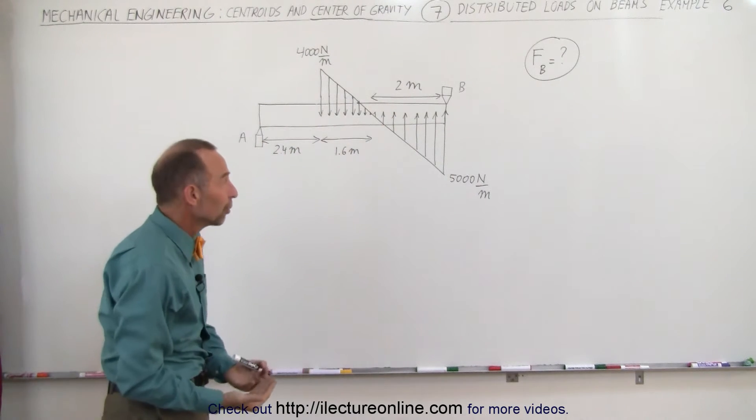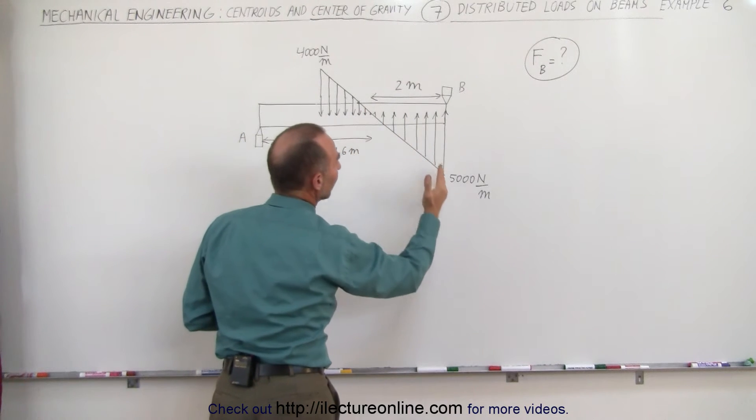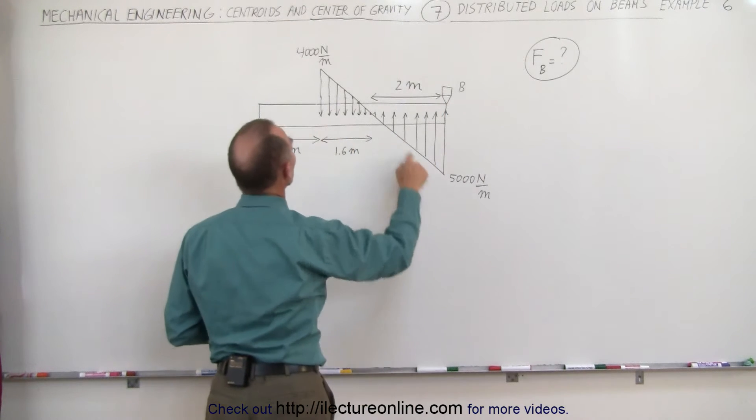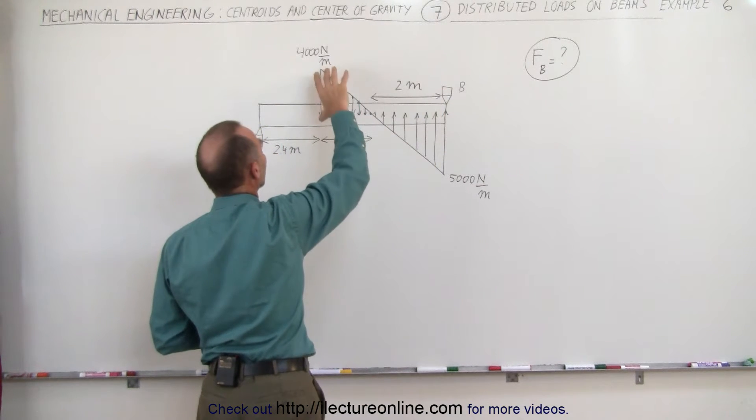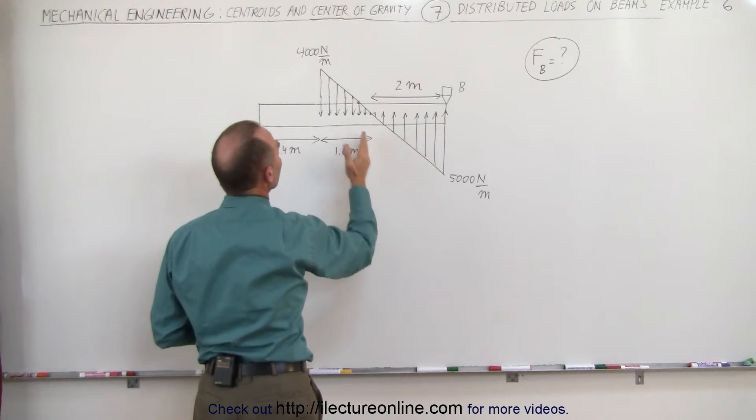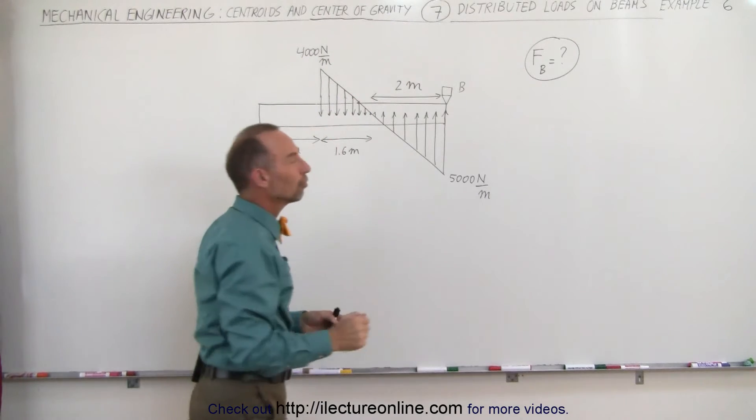And then we start having a load pushing upward. We would call that a negative load because it's pushing against the beam, starting from 0 N per meter, increasing to 5,000 N per meter by the time we reach point B. Notice that the downward load between 2.4 and 4 meters goes from 4,000 N per meter to 0 N per meter.